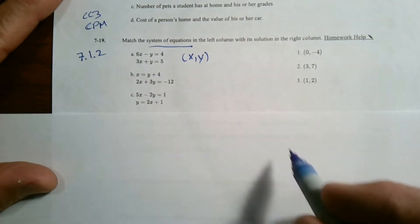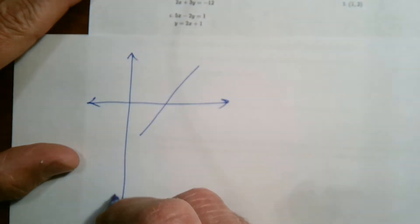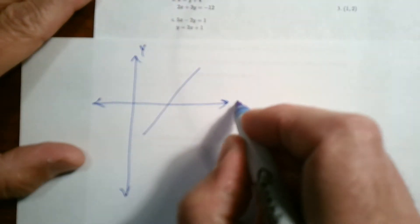Graphically, what does this look like? Graphically, this would be if I had, let me draw, if I had my coordinate system here, my x and my y.